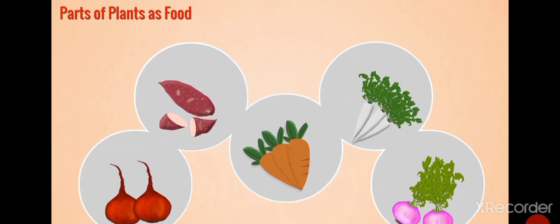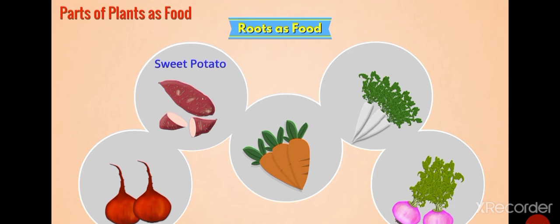We use different parts of the plants as food. For example, we use roots of plants like sweet potato, carrot, radish, beetroot, turnip, etc. as food.